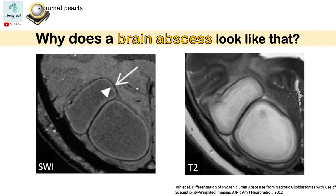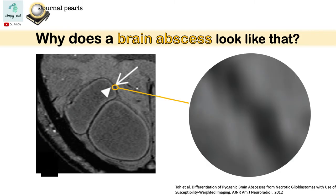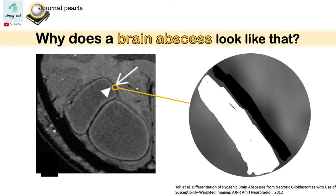So why would abscesses look like this on MRI? If we take a closer look at the rim, we will see that it has an outer dark line and an inner bright line. This is called the dual rim sign.